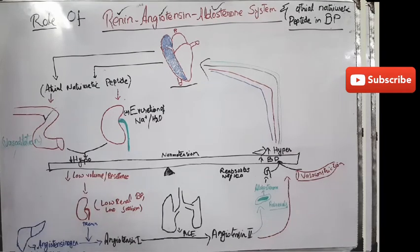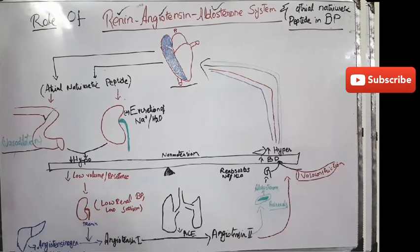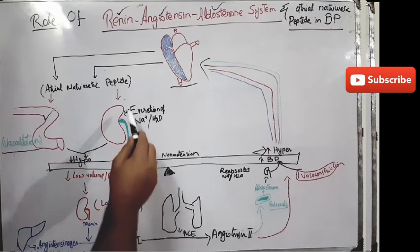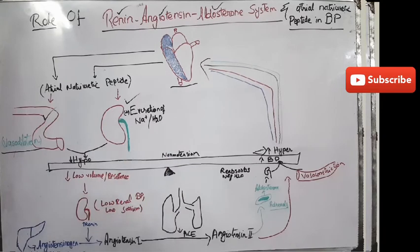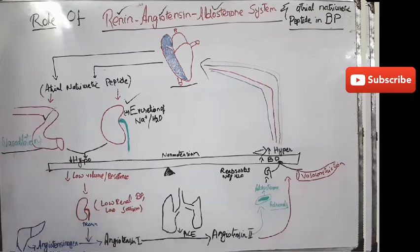First, it leads to vasodilation by acting on the blood vessels and therefore decreases blood pressure. Second, it excretes sodium and water from the kidneys, and therefore the volume of blood is decreased and blood pressure is decreased to normal levels.